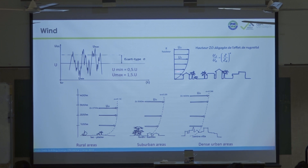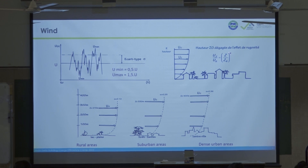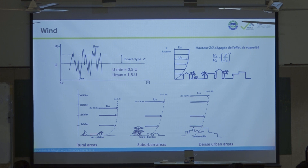The physical law of the wind profile is a power law driven by a coefficient alpha. This coefficient depends on the roughness of the site, and z_g is the height where the roughness has no effect on the wind profile. You have three cases — rural areas, suburban areas, and dense areas — and in each case the alpha coefficient and z_g are different.